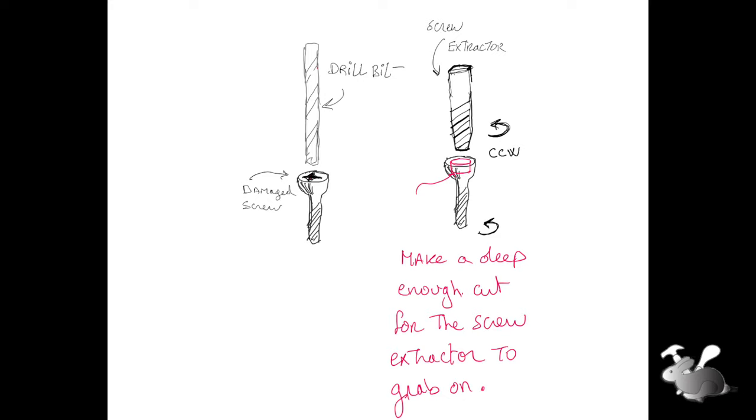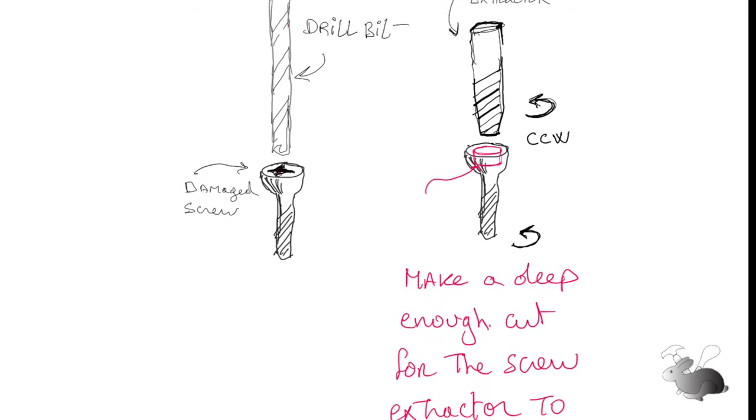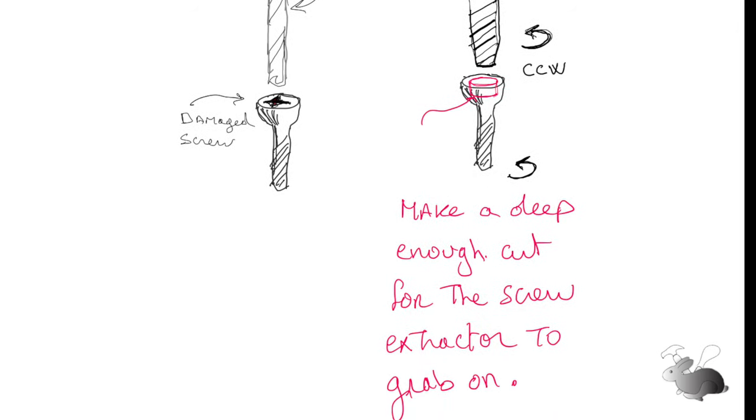The second one is drilling out the screw head, making a deep enough pocket for the extractor to grab on. And the third is using the screw extractor to back off the screw.